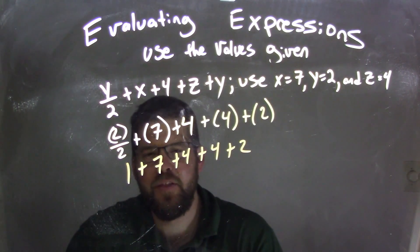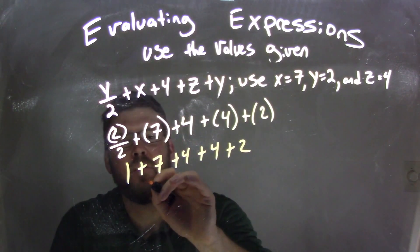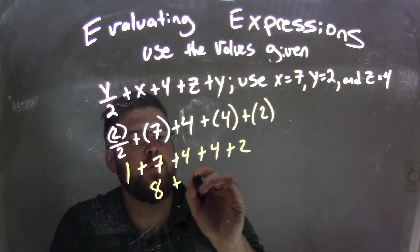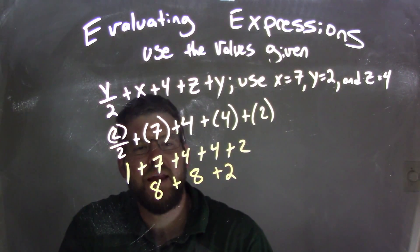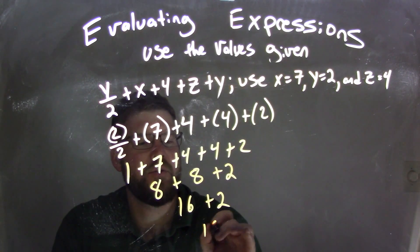Now since it's all addition, we can add some of them together. Let's group them. 1 plus 7 is 8, and 4 plus 4 is 8 plus 2. Then 8 plus 8 is 16 plus 2, and 16 plus 2 is 18.